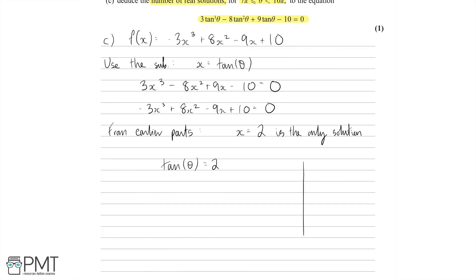Let's draw a CAST diagram. We label it C-A-S-T: in the bottom right quadrant C stands for cos (when cos is positive), A stands for all (when all trig values — cos, sine, and tan — are positive), S stands for sine (when sine is positive), and T stands for tan (when tan is positive). Since tan theta is positive, we look at the A and T quadrants. Inverse tan of 2 in radians gives approximately 1.107. So we have one solution at 1.107 and another at pi plus 1.107.